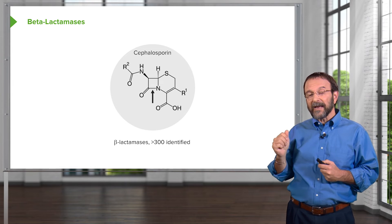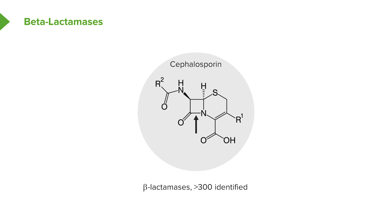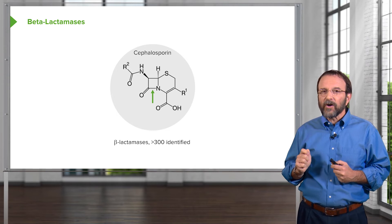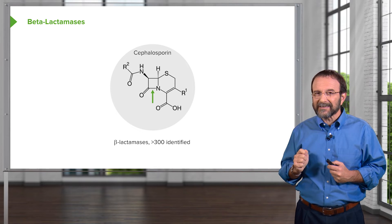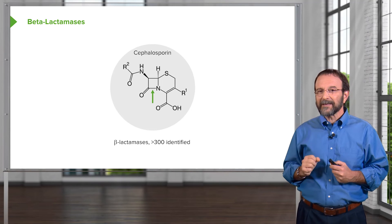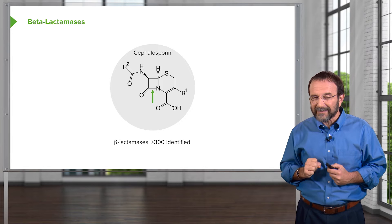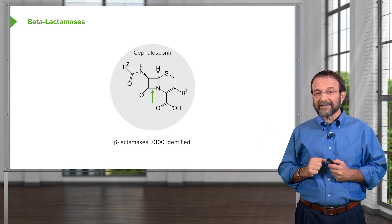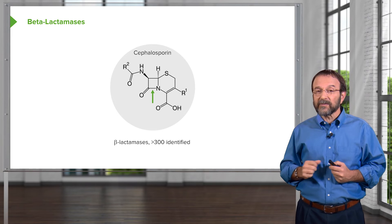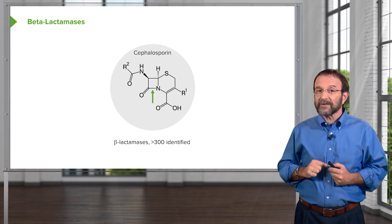Going back to our beta-lactam antibiotics, the arrow points to the beta-lactam ring, which is common to all members of this class. We have so far identified over 300 beta-lactamases — enzymes that cut that beta-lactam ring. These beta-lactamases encode resistance to the beta-lactam antibiotics. Beta-lactamases are everywhere, illustrating the extent of the problem.